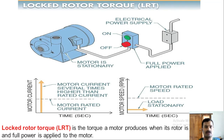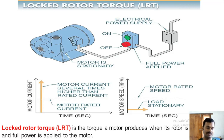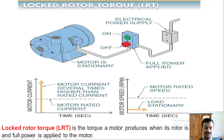Locked rotor torque (LRT) is the torque a motor produces when its rotor is stationary and full power is applied. When the motor is in standstill condition and we give full rated power, the motor starts rotating. The torque produced at that moment is called locked rotor torque, and the current taken to produce this torque is called locked rotor current.